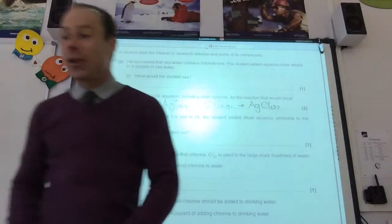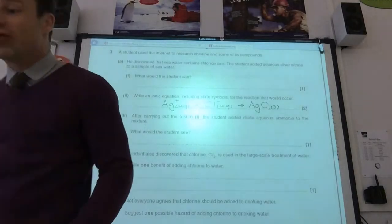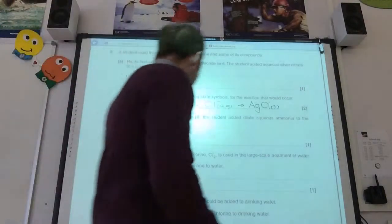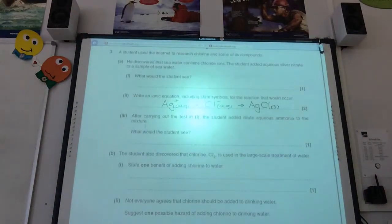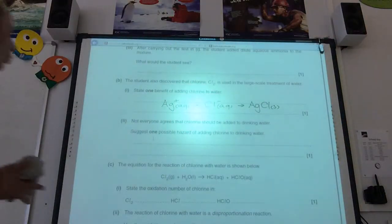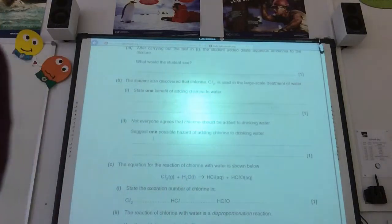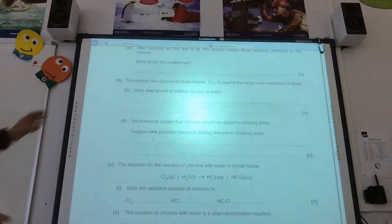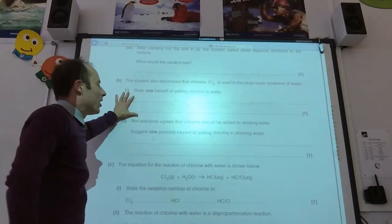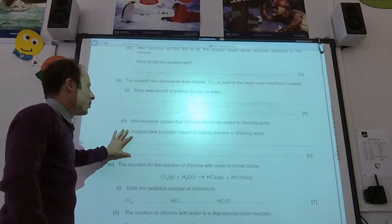The student also discovered chlorine is used in large-scale treatment of water. One benefit of adding chlorine to water. One benefit, of course, we know is it kills the bacteria. So, it makes the water safe to drink. Not everyone agrees that we should do this. So, just one possible hazard. I know we talked about chlorine is toxic. So, one harmful effect is that chlorine is toxic. And it also forms chlorinated hydrocarbons. It can form chlorinated hydrocarbons, which may cause cancer.